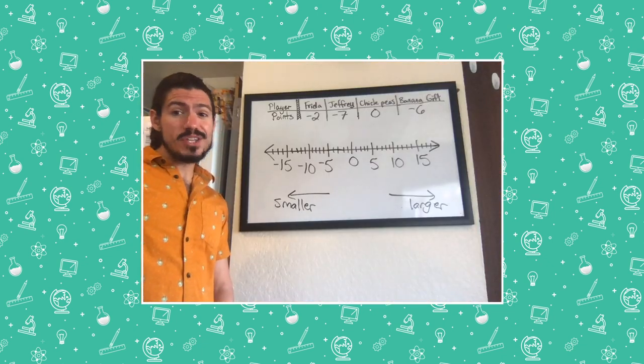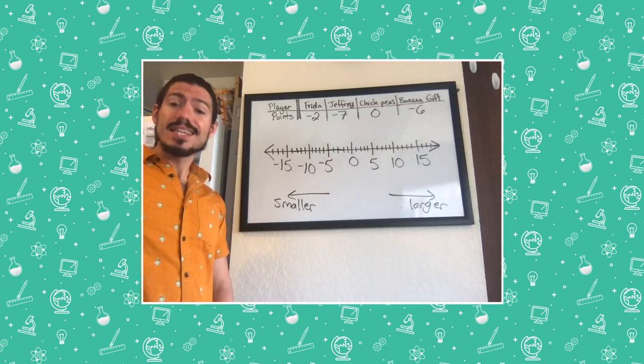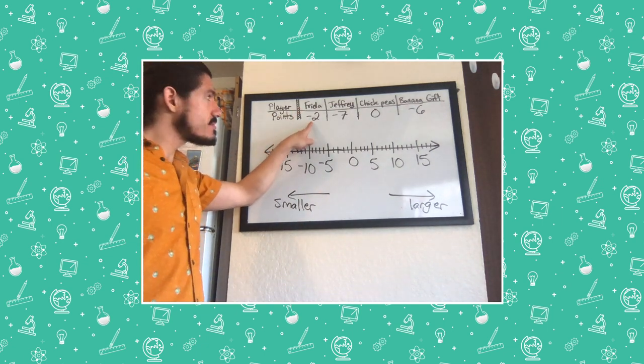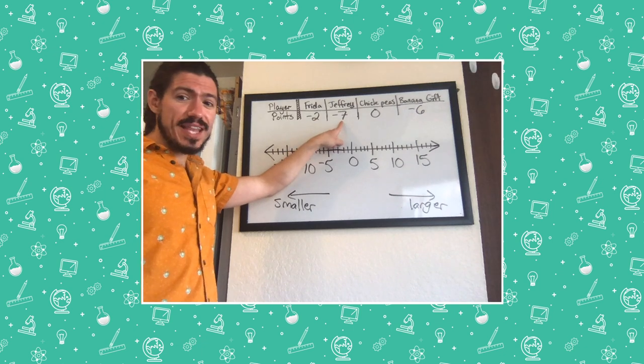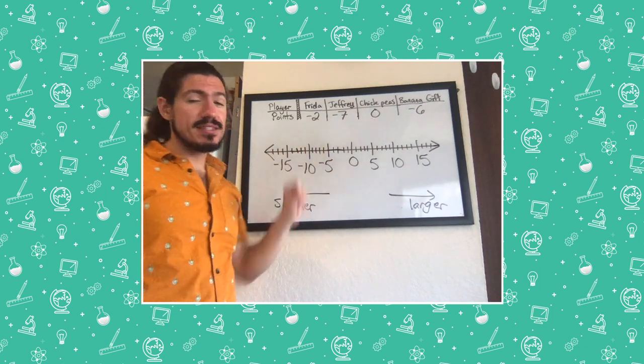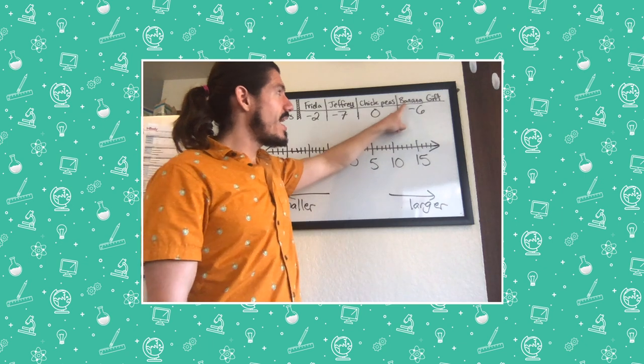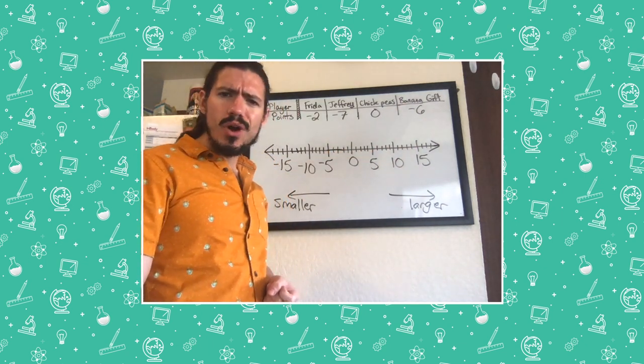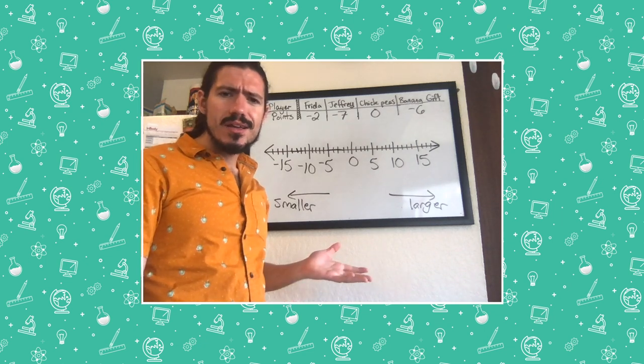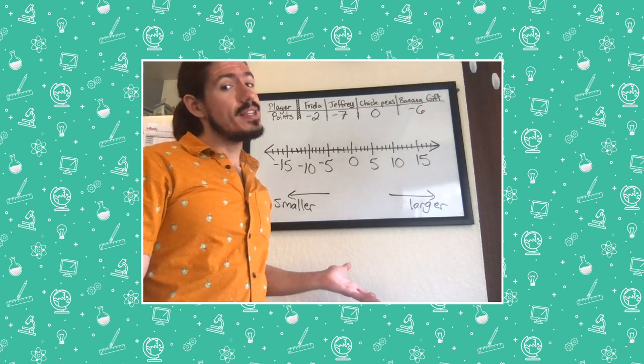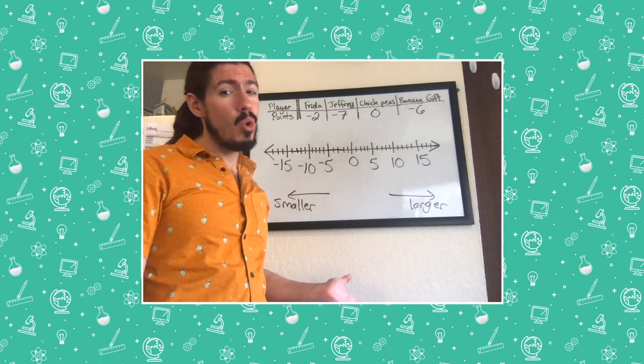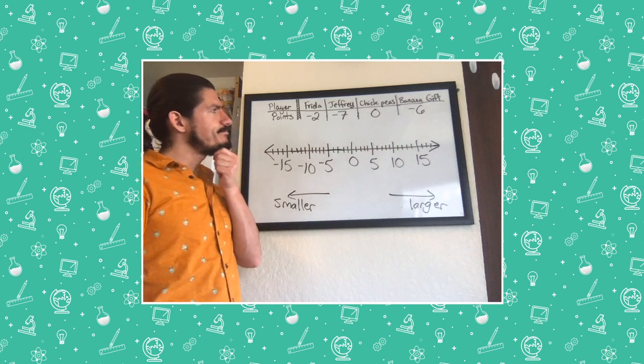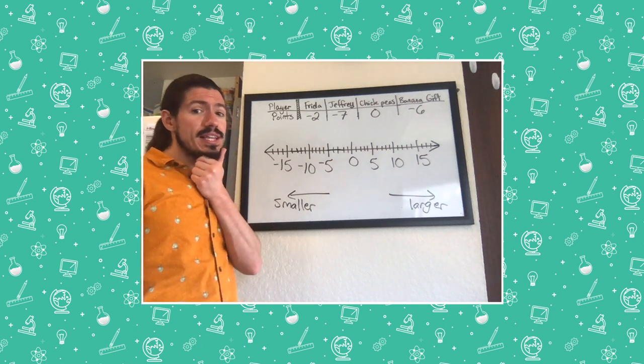Well, the game's over and the results are in. Let's see what happened. Frida finished with negative two points. Jeffrey finished with negative seven points. A can of chickpeas finished with zero points. And banana gift finished with negative six points. Who won? Who came in second? Who came in third? Who came in fourth? This is the kind of game where you want more points. So the one with the most points is the winner. Well, let's find out.